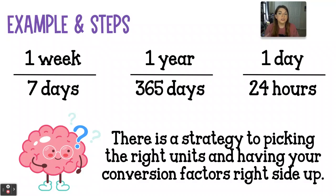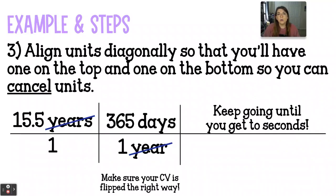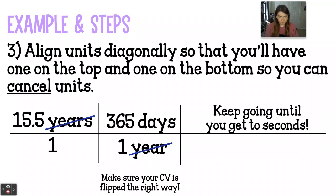The strategy is to choose the shortest path to get from what we have to what we need, and we're going to use the units to guide us. We're going to align our units diagonally so that we have one on the top and one on the bottom — just like in math class where you have an x on the top and an x on the bottom of a fraction, and you can cancel them out because x divided by x is just one. So we took our 15.5 years and put it over one — that was step one. Then we multiply by conversion factors, aligning our units so that they cancel out until we get down to just seconds.